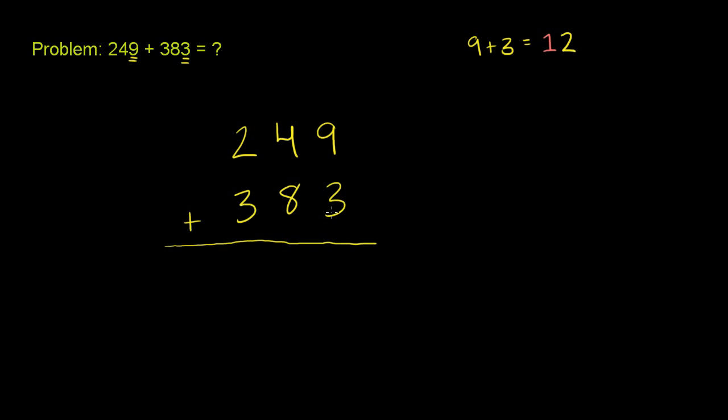So what we do is, 9 plus 3 is 12, that's the equivalent of 10 plus 2. So we write the 2 in the ones place, and the 1, which is really representing 10, we put in the tens place. Which hopefully makes sense—this now represents 10.